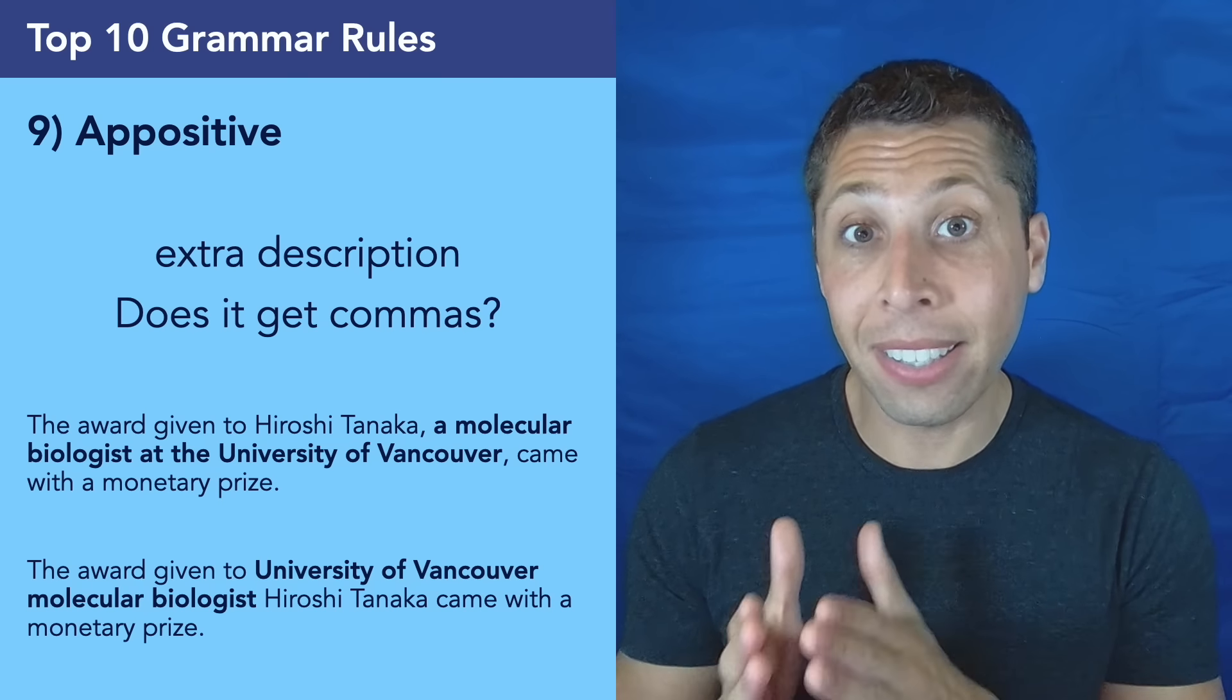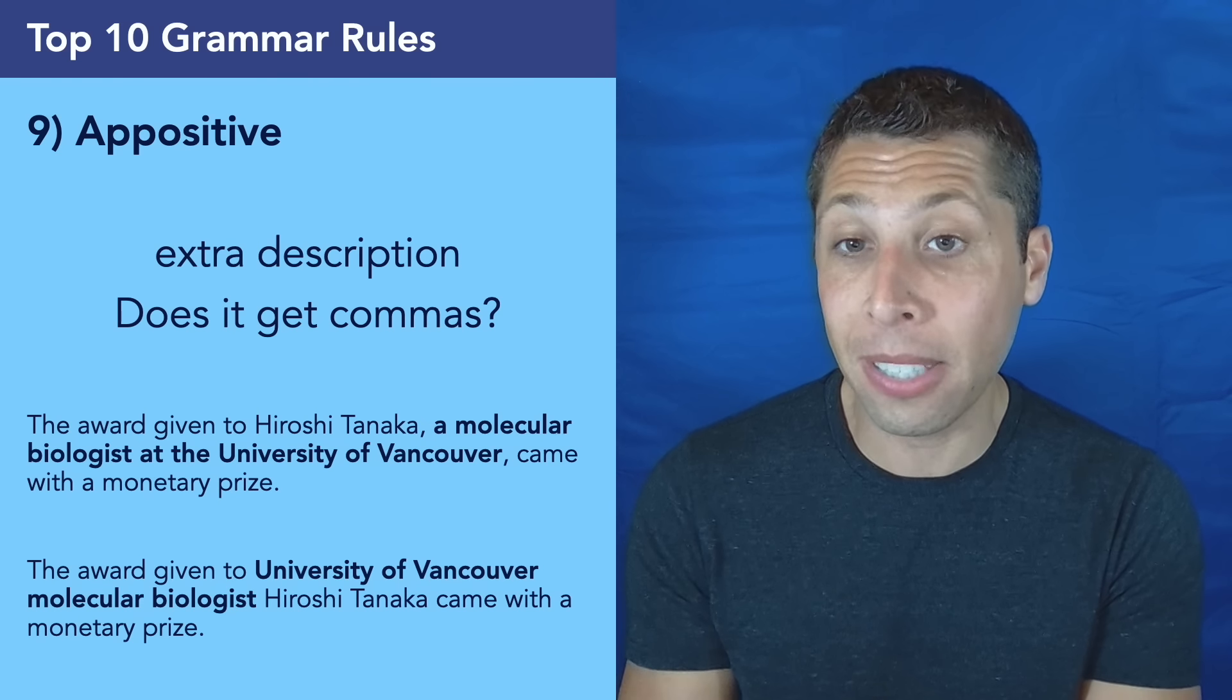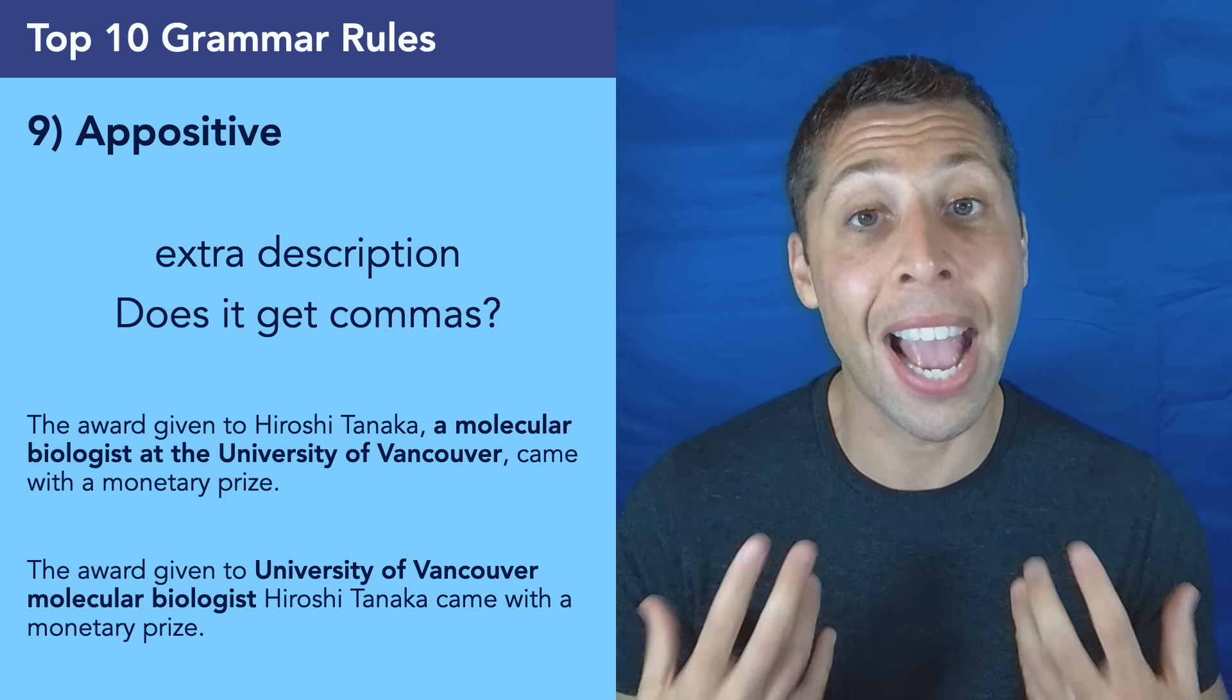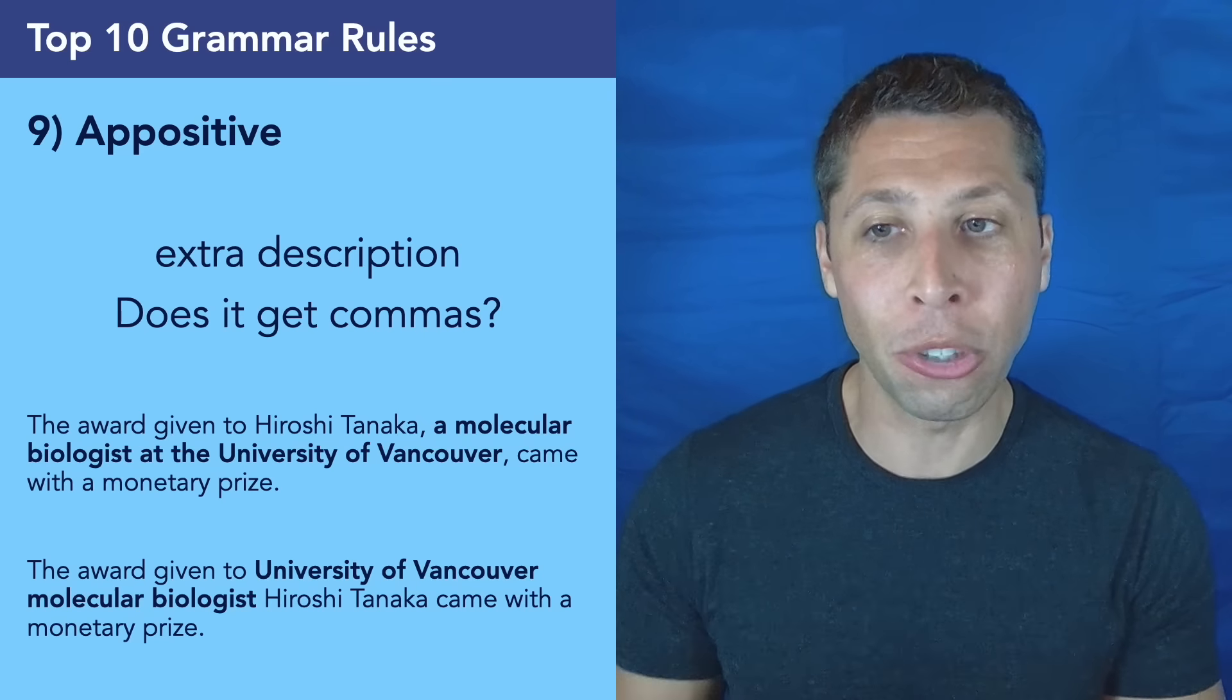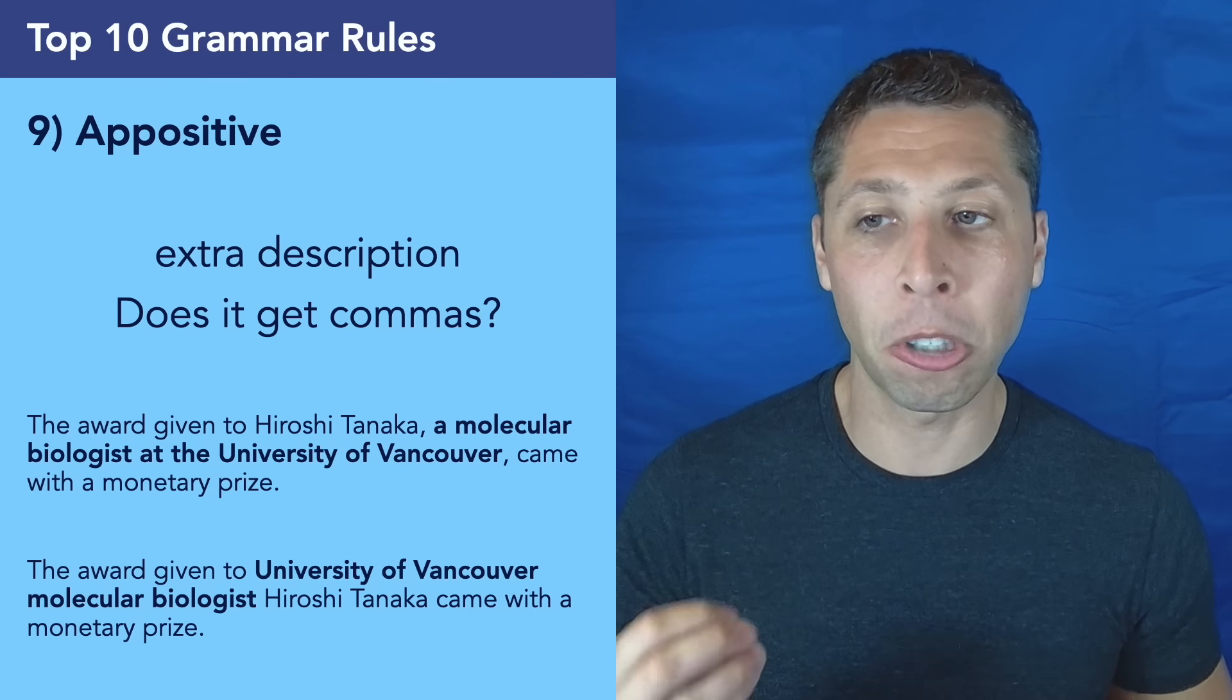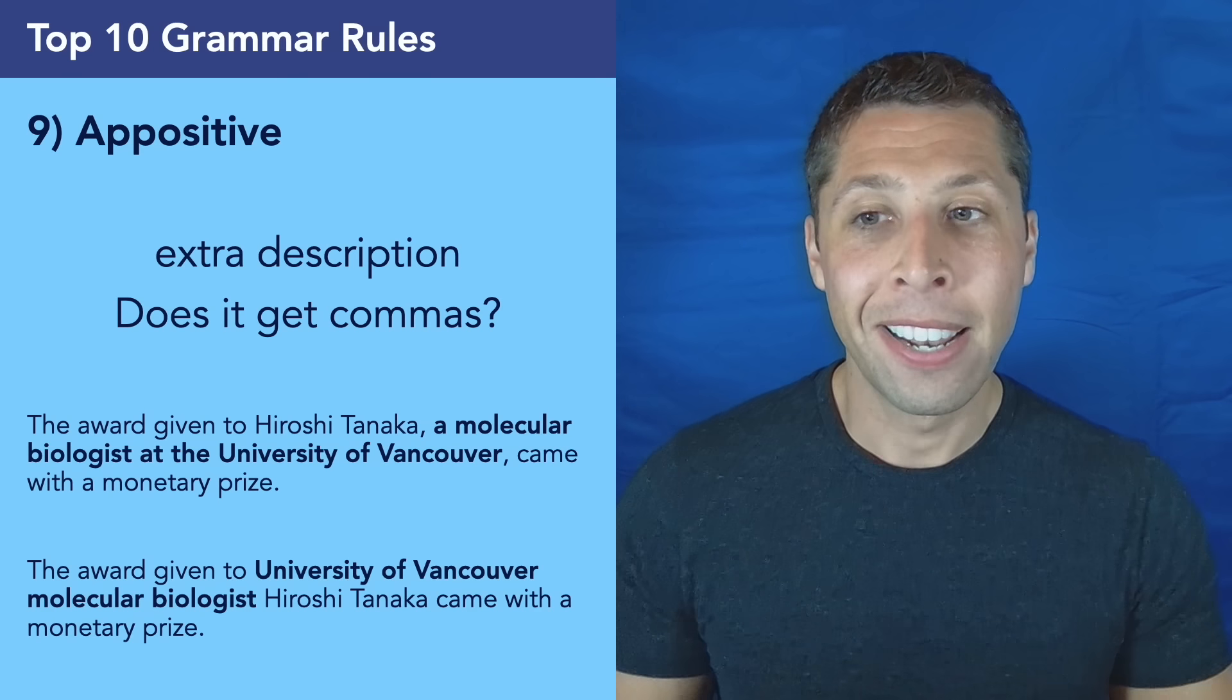So in these two examples, we're basically saying the exact same thing, but notice one of them has two commas. The other has no commas. In both cases, the bolded part is what I would consider the appositive, the extra description. What is it an extra description of? It is a description of Hiroshi Tanaka. That's the main specific name that we're using to kind of center the sentence. The other piece, a molecular biologist at the University of Vancouver, is just extra information about Hiroshi Tanaka.